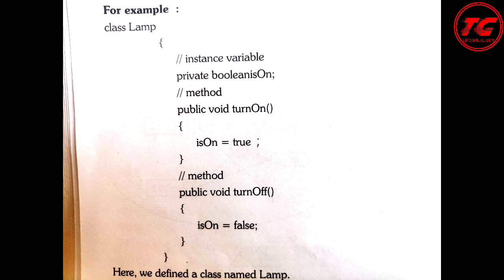The Lamp class has a method public void turnOn, which assigns true to the isOn variable, and another method turnOff, which assigns false to isOn. Since isOn is a boolean type, it can hold only two values: true or false. So turnOn gives isOn a true value and turnOff gives it a false value. This is the blueprint — the template of the Lamp class — and using it we can create objects of that class.